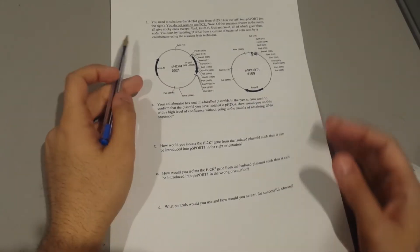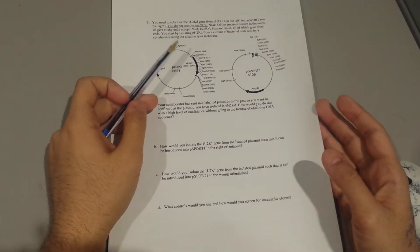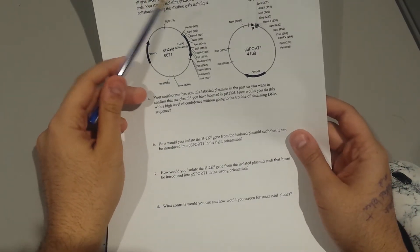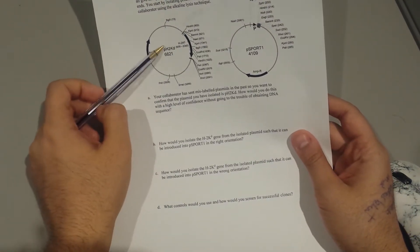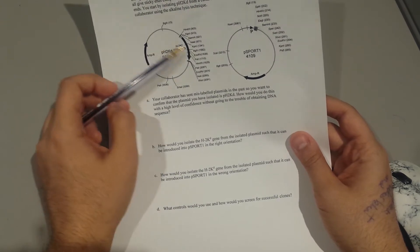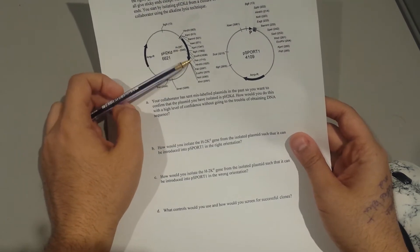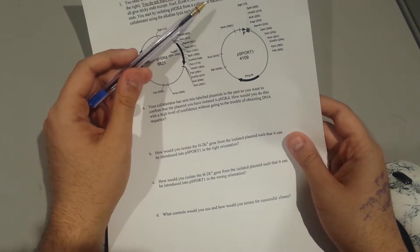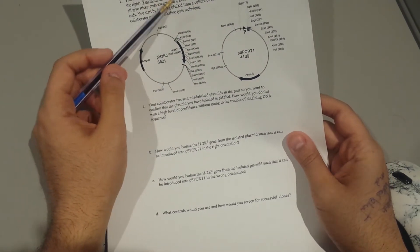Hi guys, I have a question about the restriction mapping type of question. It's asking you to subclone from plasmid PH2 a specific portion of this gene into another vector PS4, and you don't want to use PCR.